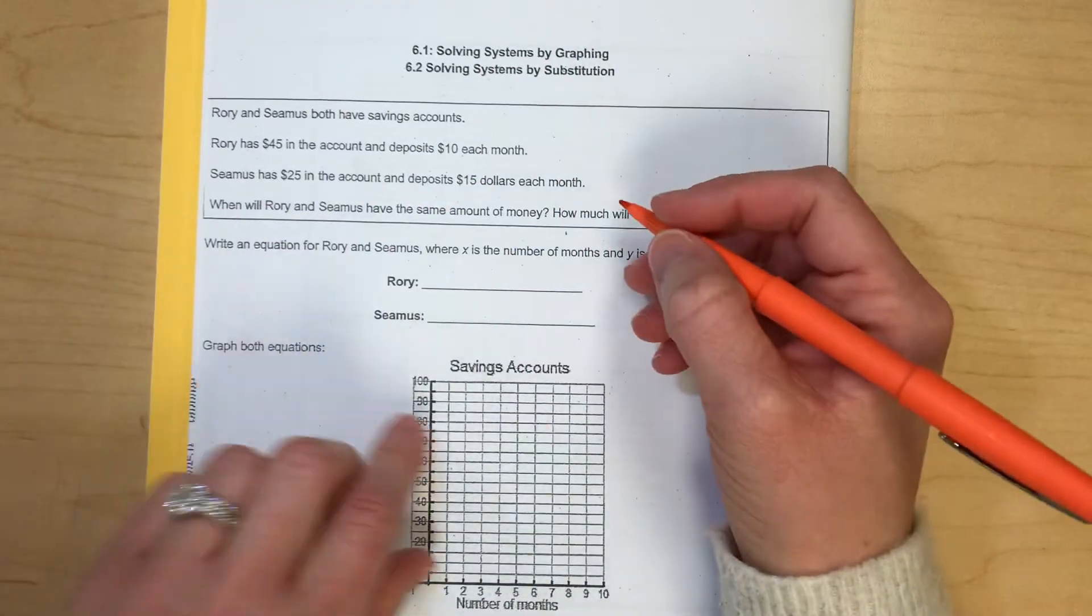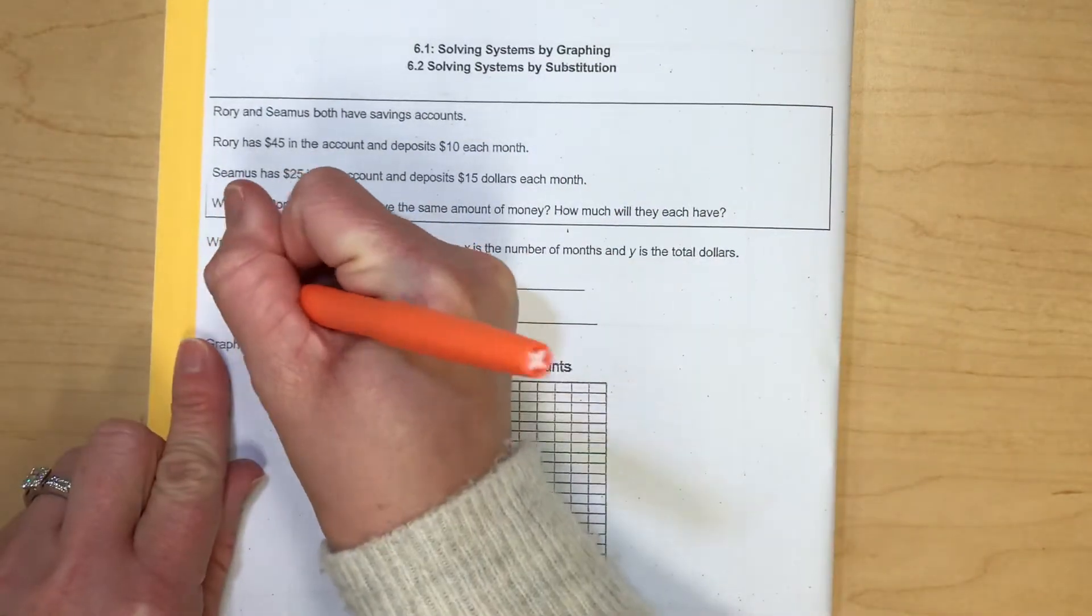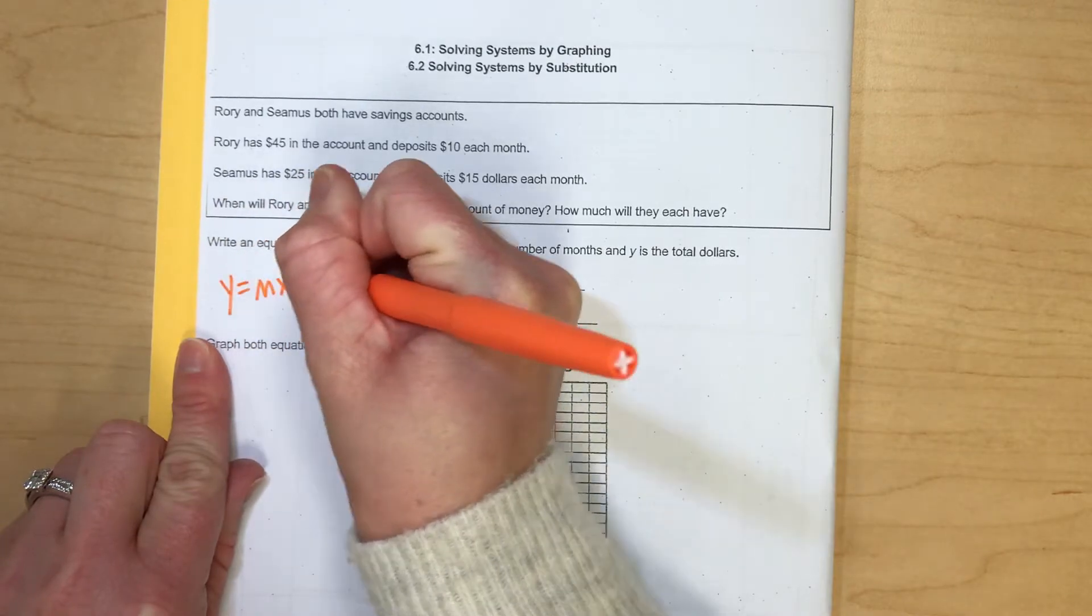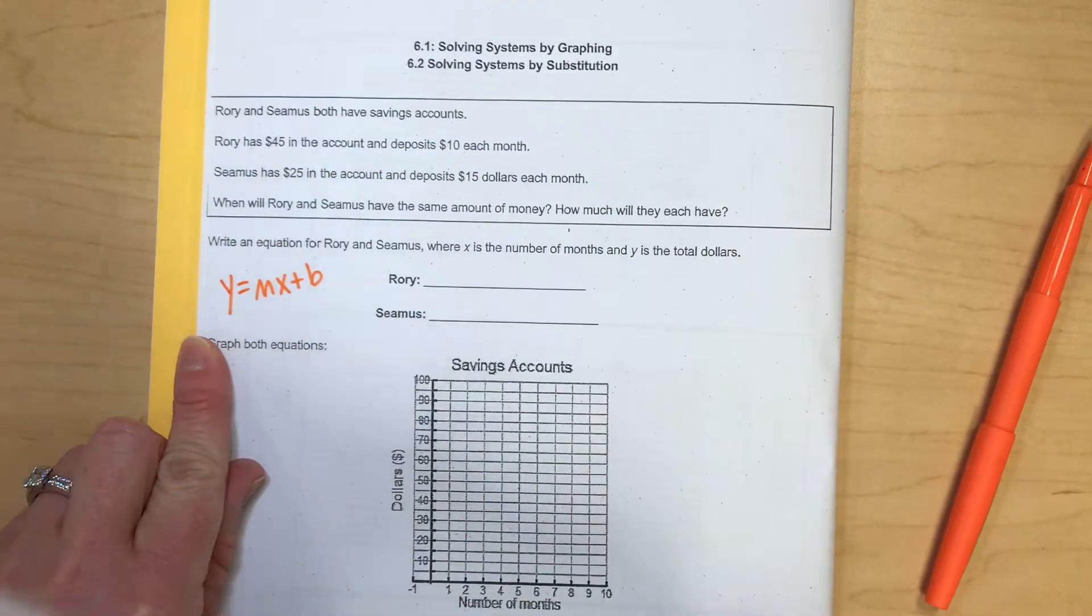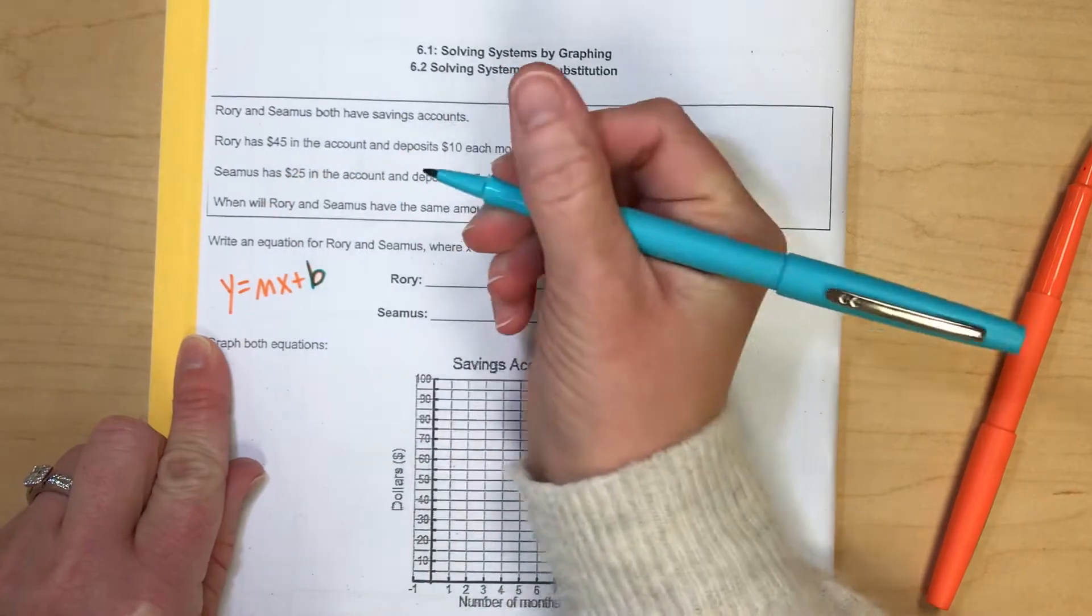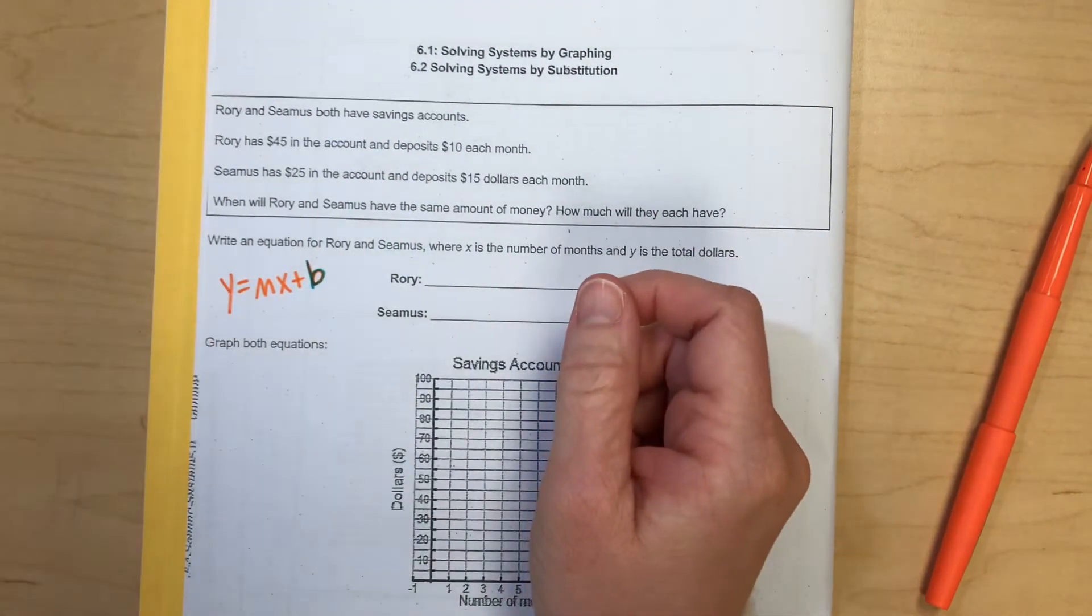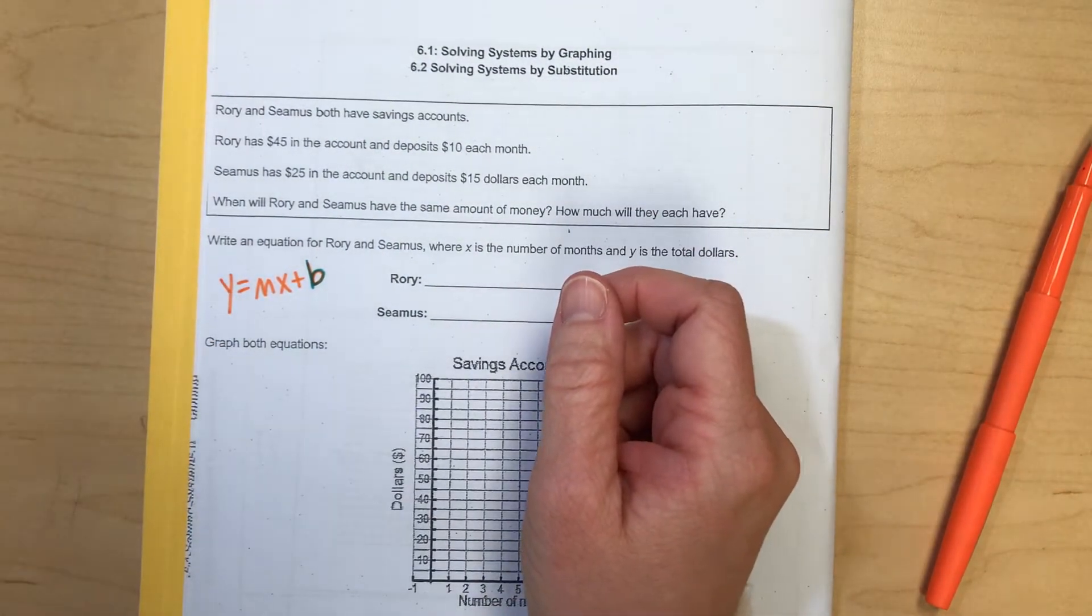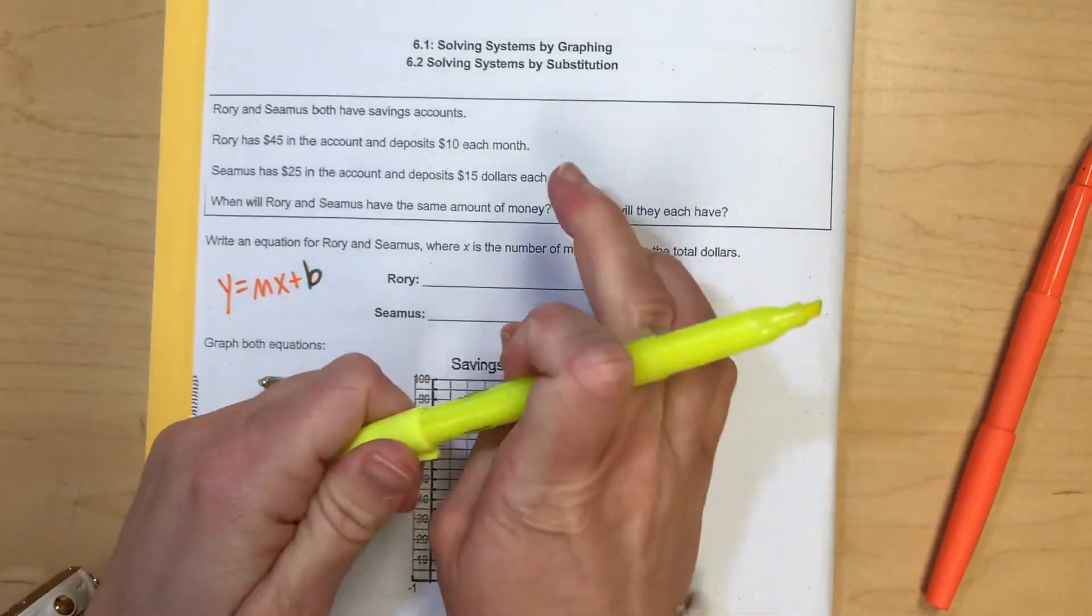That function that we've been talking about that looks like Y equals MX plus B. The B is normally called your starting point. And I noticed that I have a starting point in both Rory and Seamus's scenarios here.